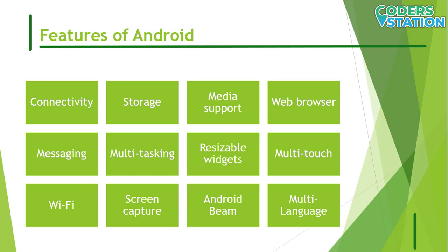The next feature is a web browser based on the open source Blink (previously WebKit) layout engine, coupled with Chrome's V8 JavaScript engine, supporting HTML5 and CSS3. The next feature is messaging — SMS and MMS are available, including threaded text messaging and Android Cloud to Device Messaging (C2DM), with the enhanced version now being Google Cloud Messaging (GCM).